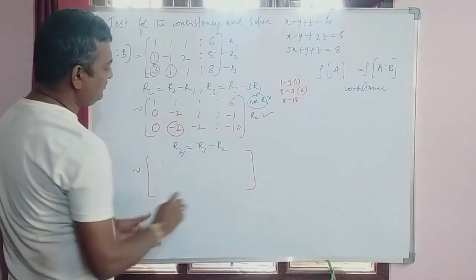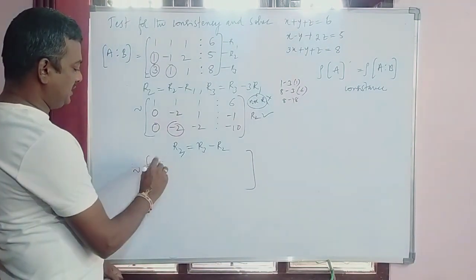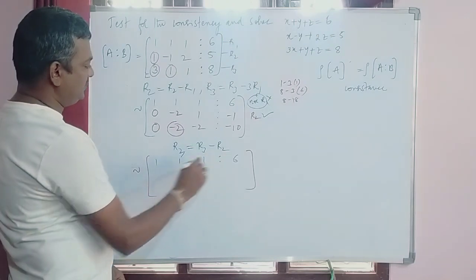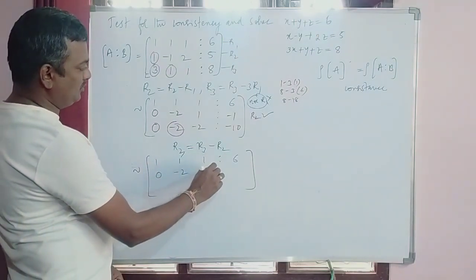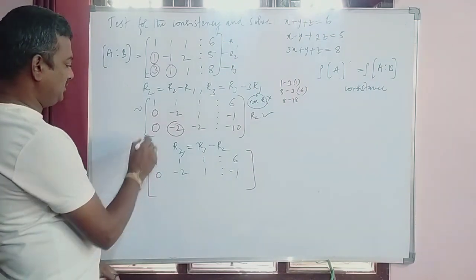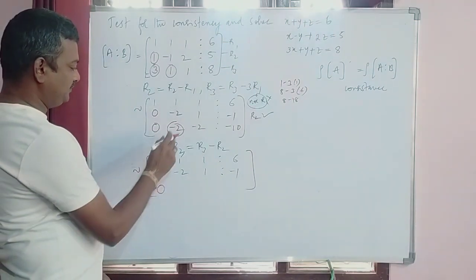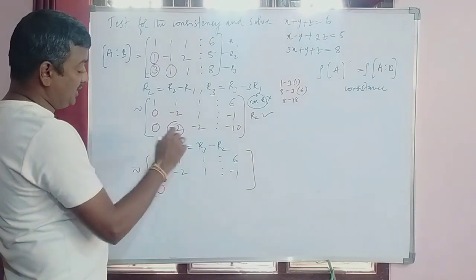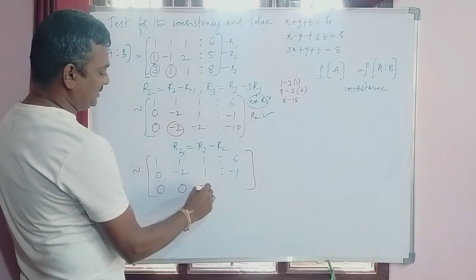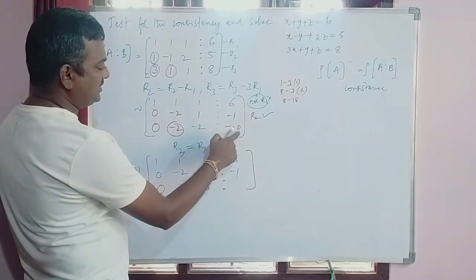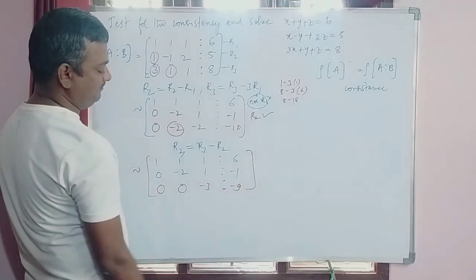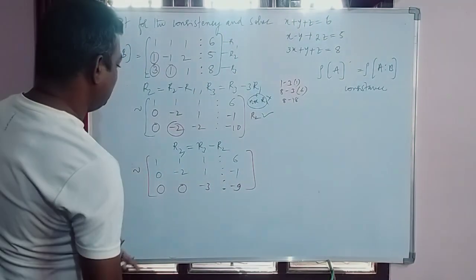So now this acts as equivalent. This is 1, 1, 1, 6; 0, -2, 1, -1. Now 0 minus 0 is 0, -2 minus -2 becomes 0, -2 minus 1 is -3, -10 minus -1 is -9.